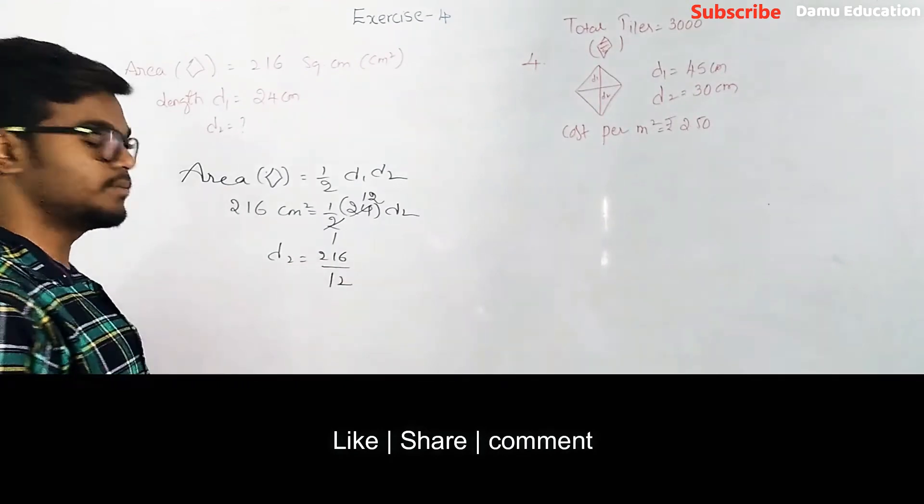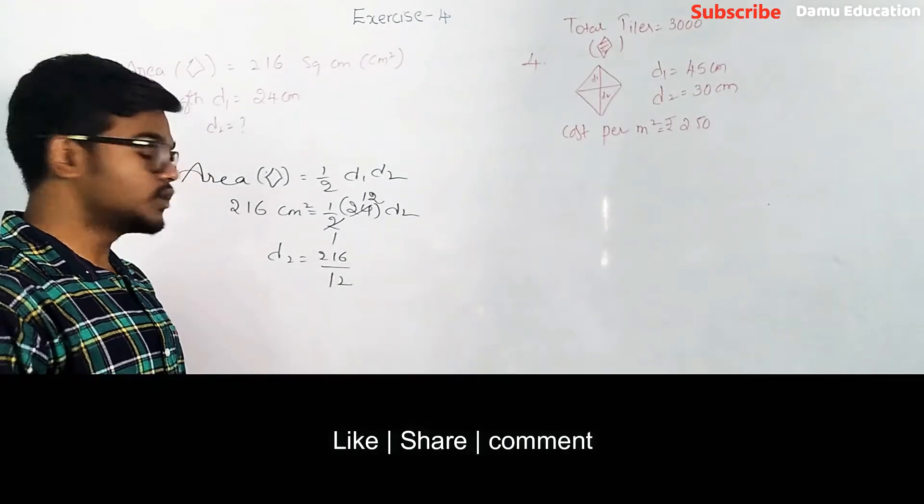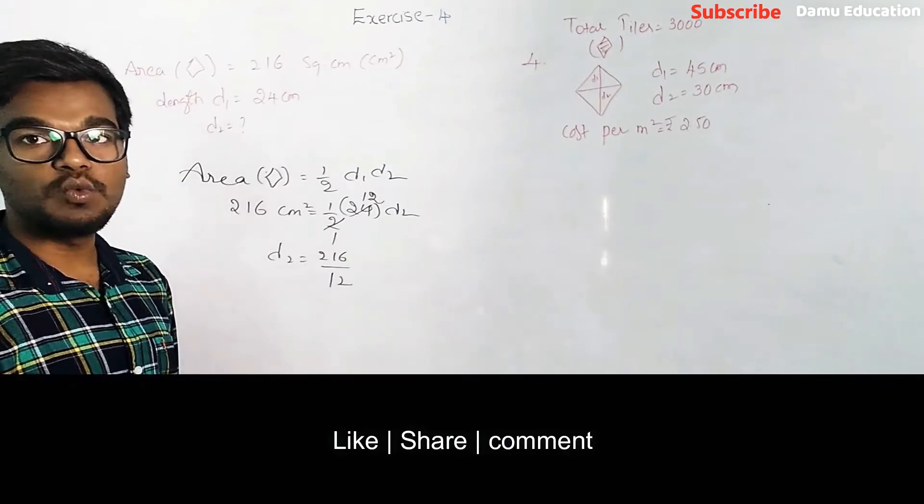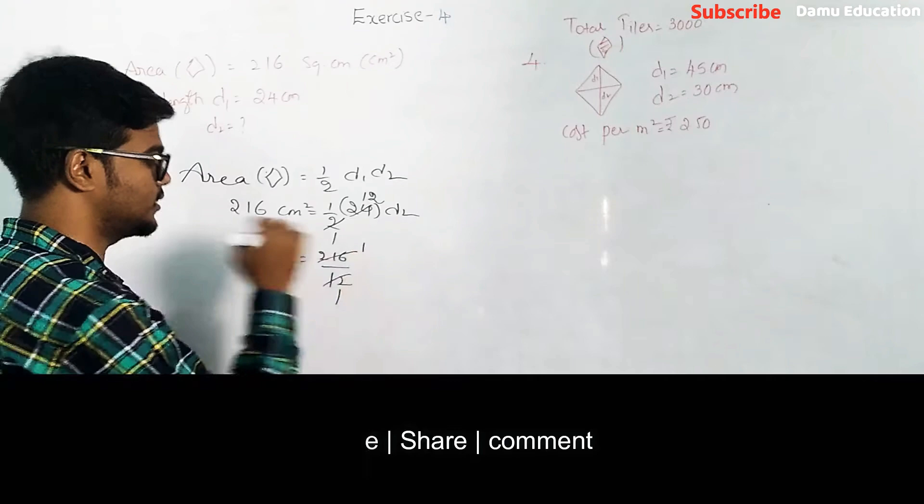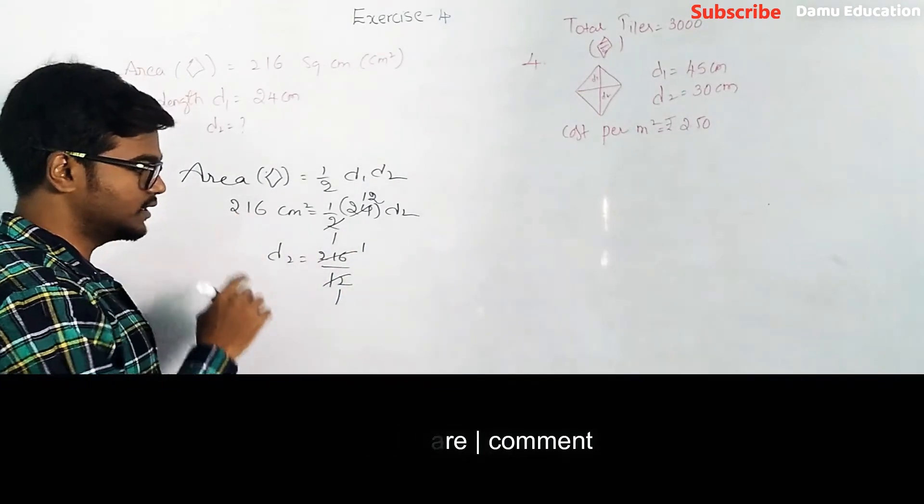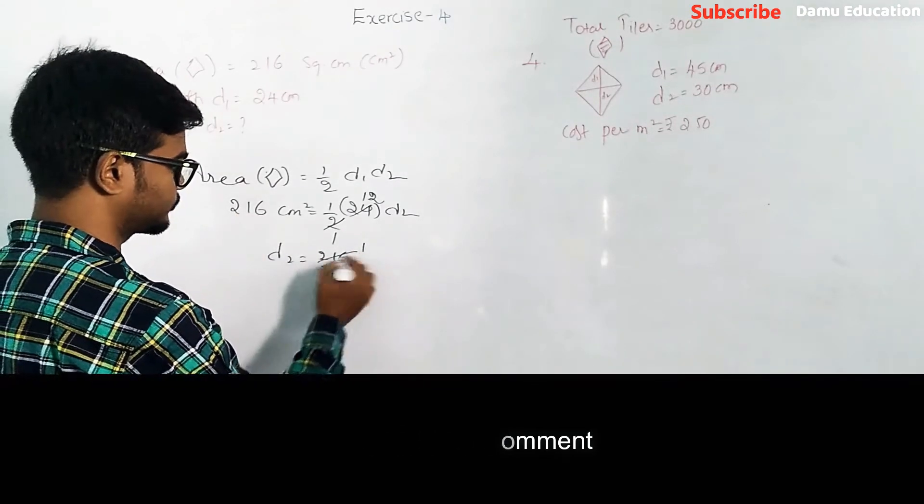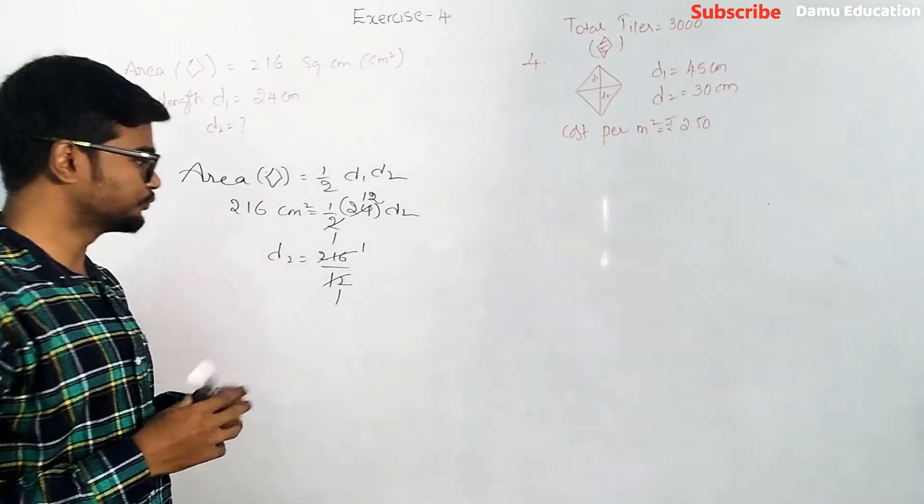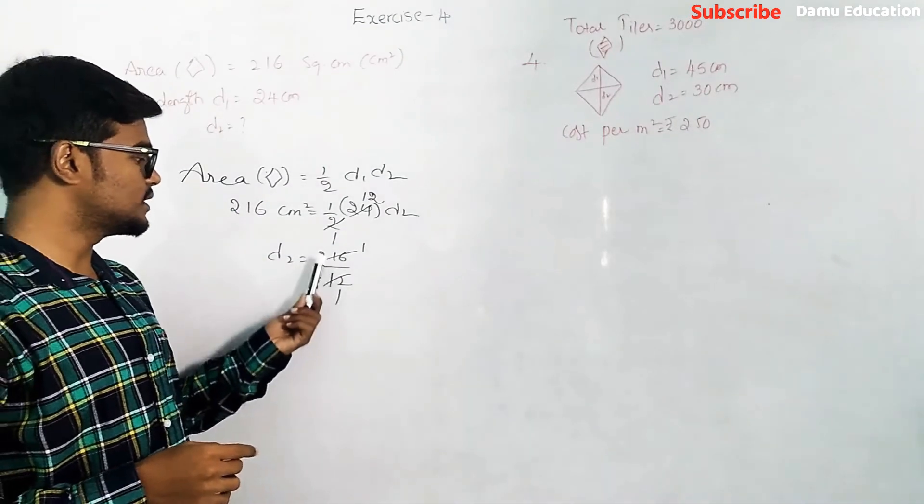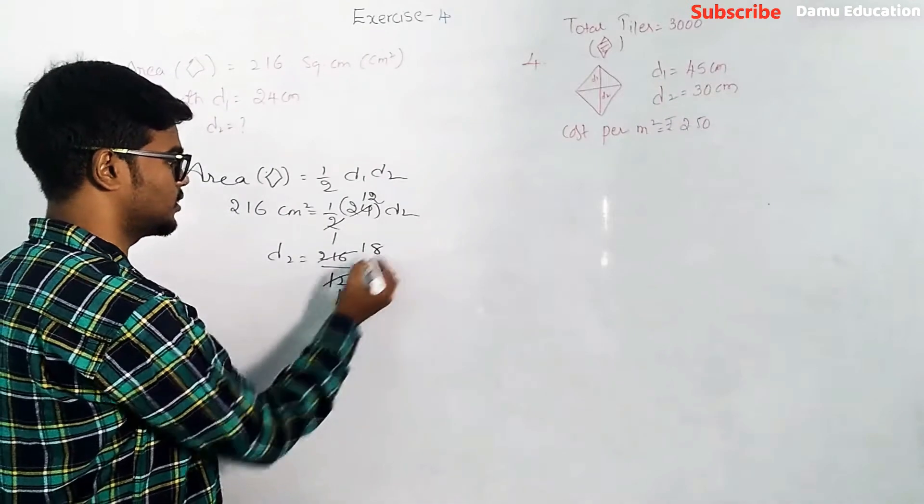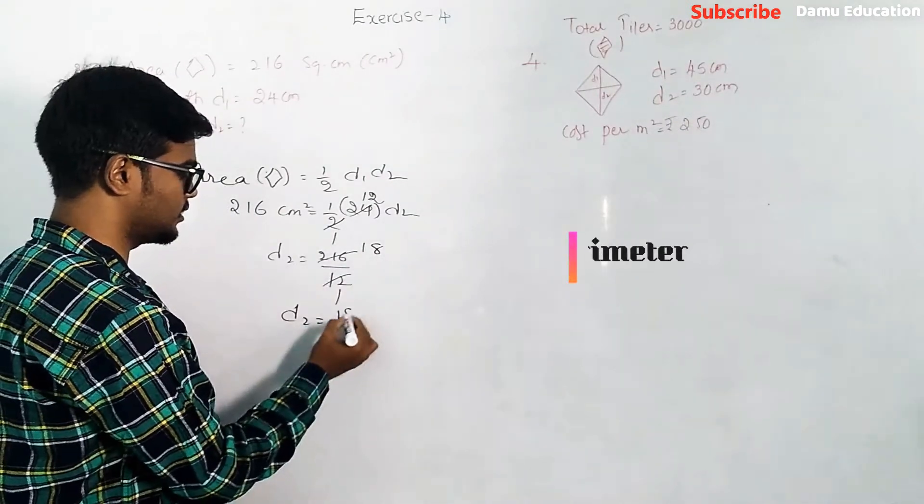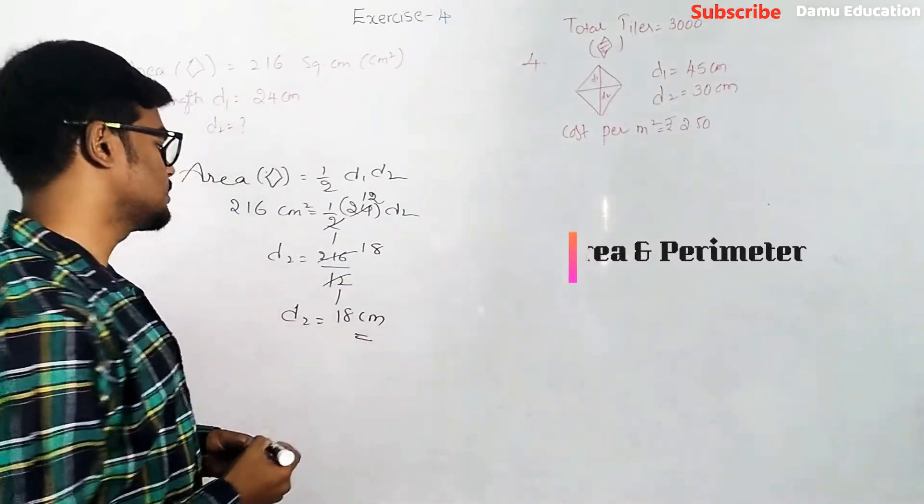So simply we can do 216 by 12 directly. 12 times 12 is 144, 12 times 18 is 216, so d2 will be 18 centimeters.